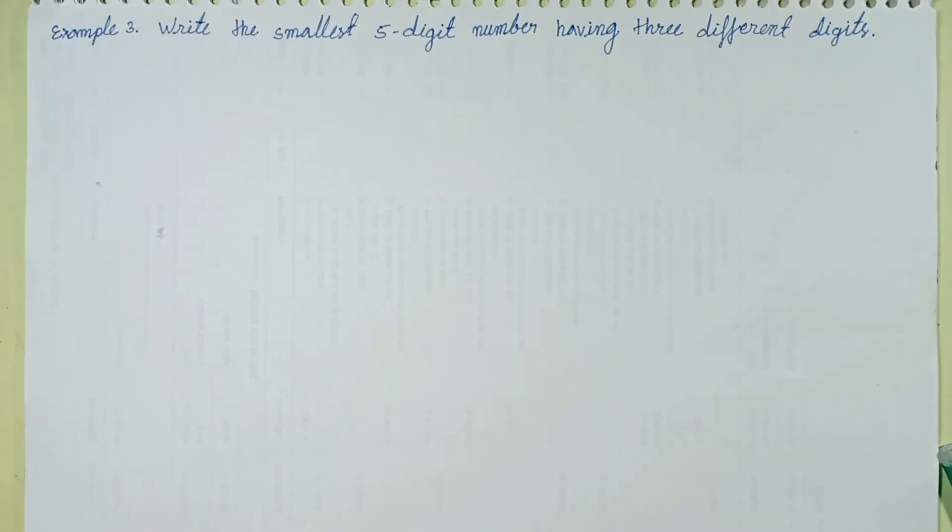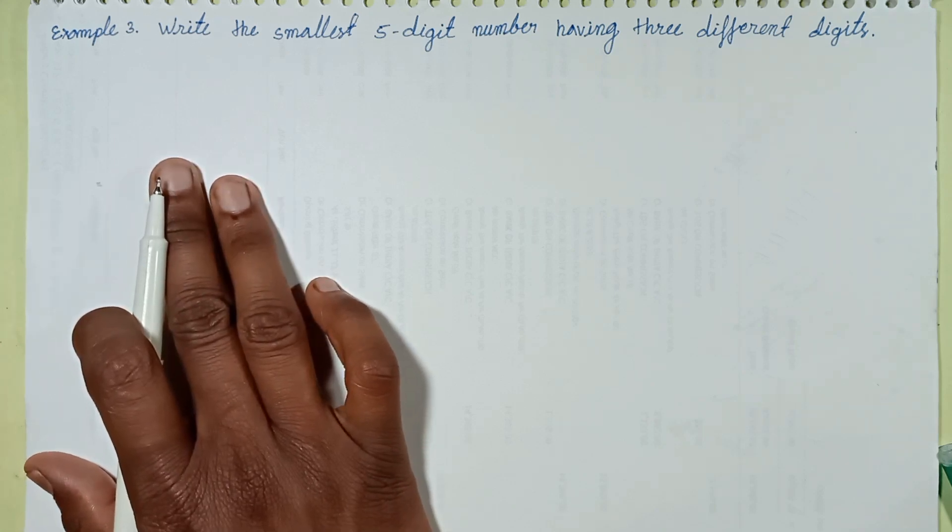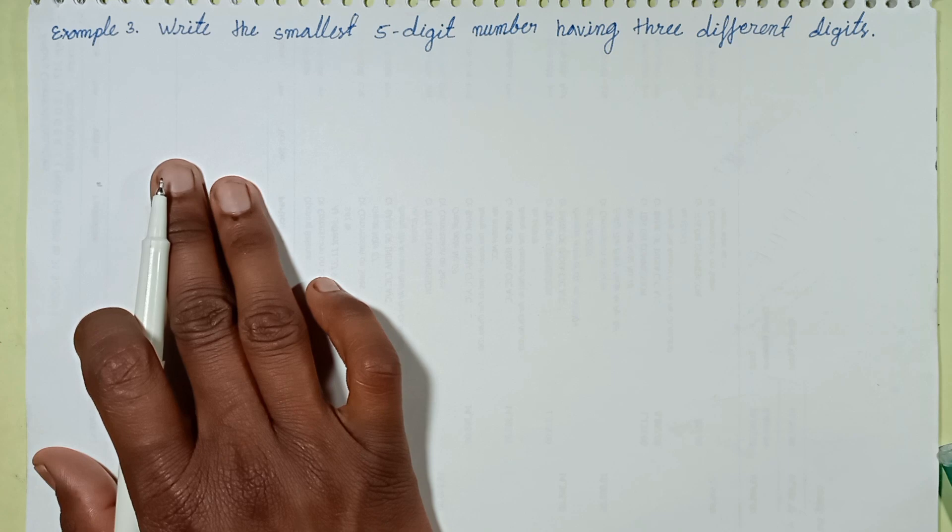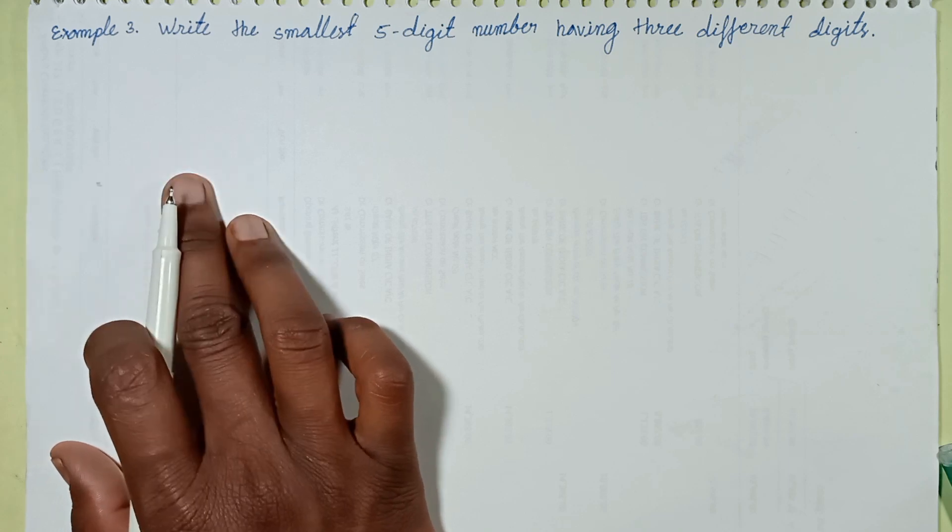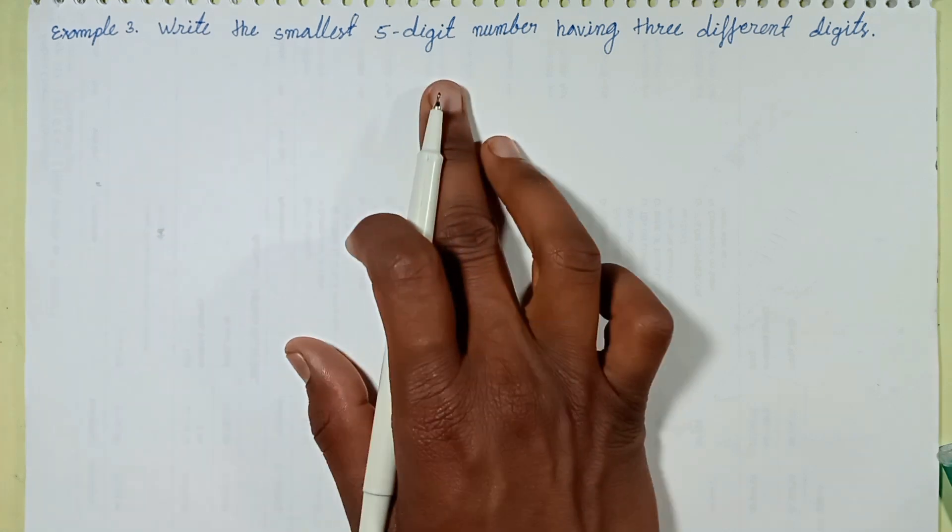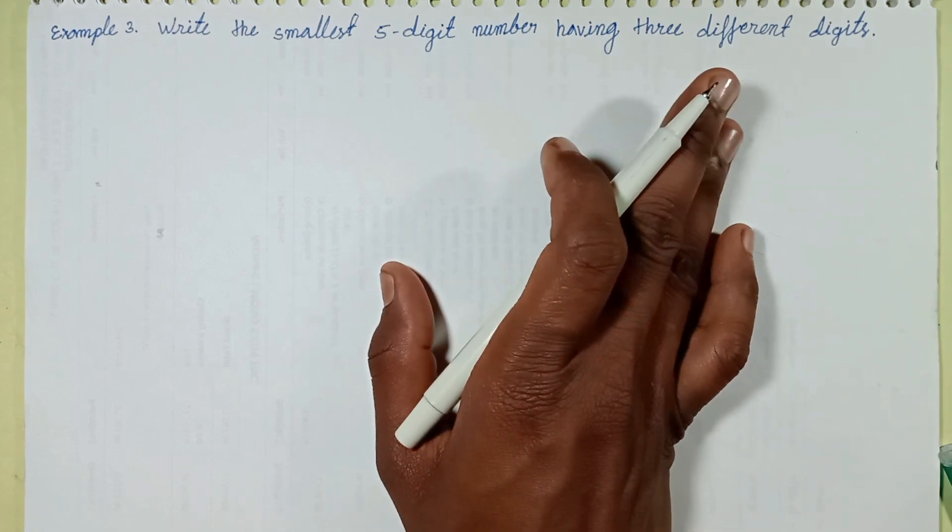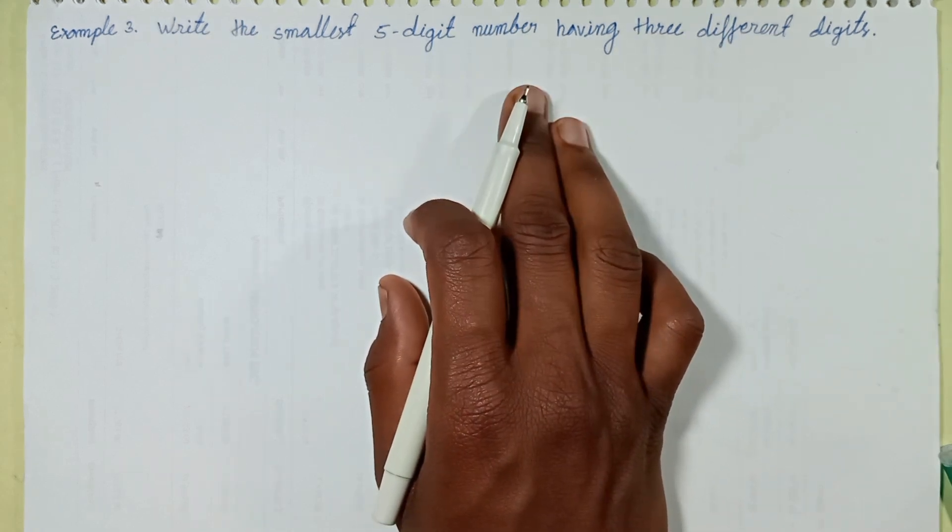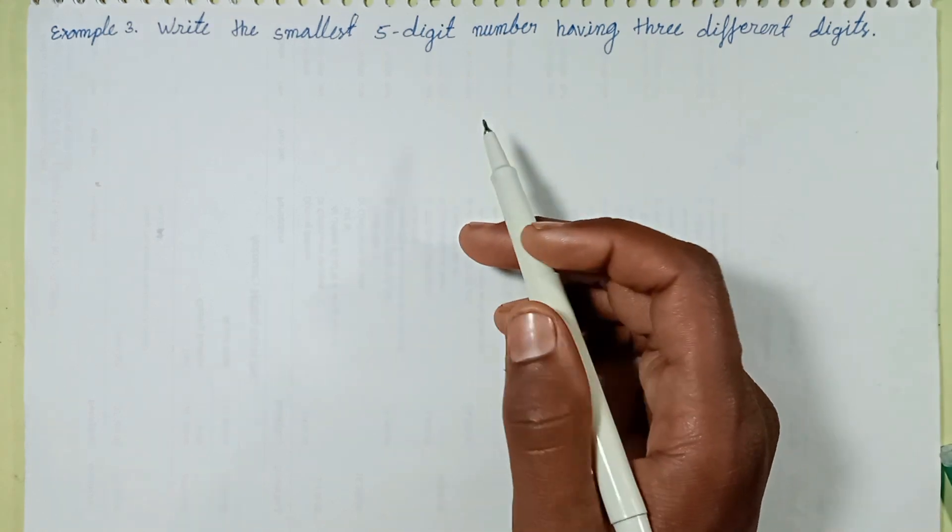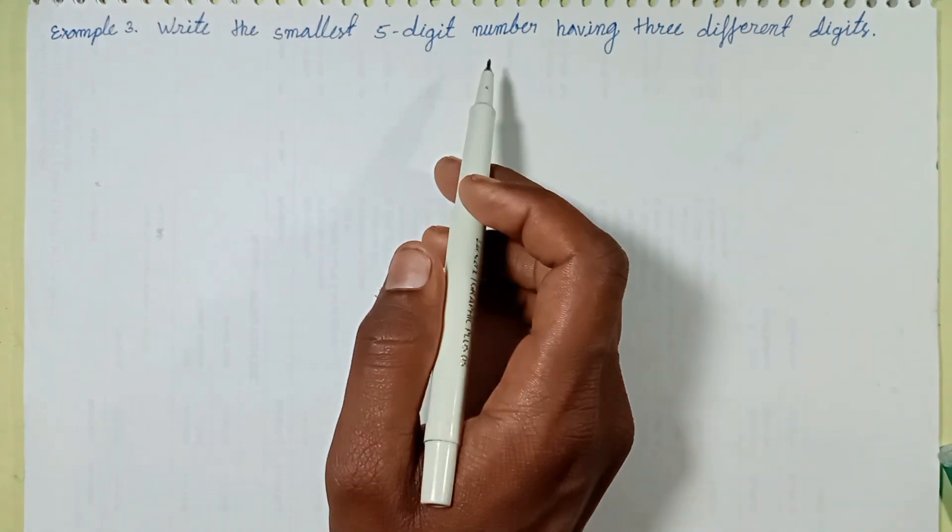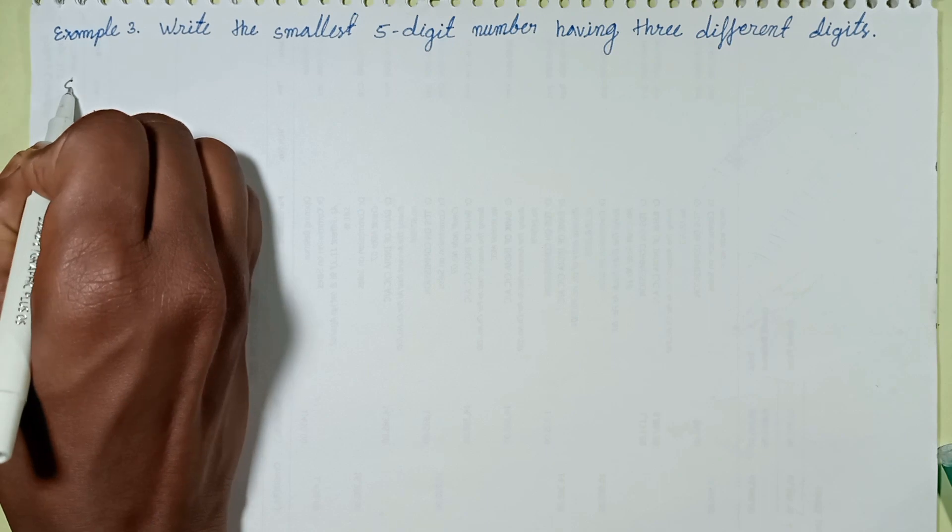Bande Mantra everyone, welcome back to this episode. This episode discusses example number three from R.D. Sharma Mathematics for class six: Write the smallest five-digit number having three different digits. First of all, let's write the smallest five-digit number. Solution: